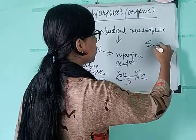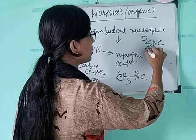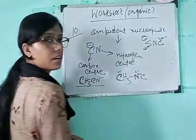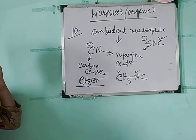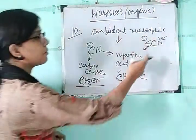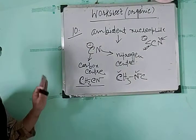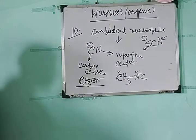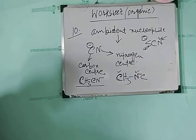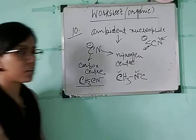Another ambident nucleophile is thiocyanate. Thiocyanate sometimes utilizes its sulfur center and sometimes its carbon center. So both thiocyanate and cyanide are ambident nucleophiles — those that have more than one attacking center and are able to utilize them.